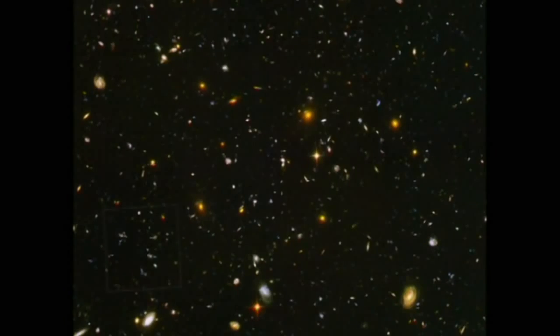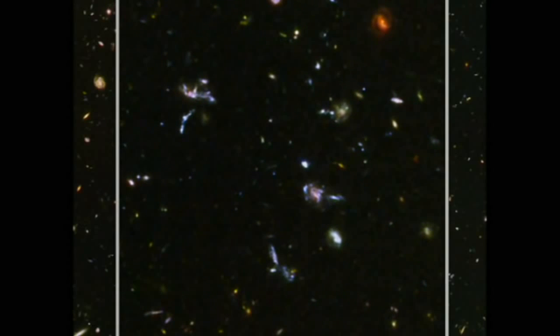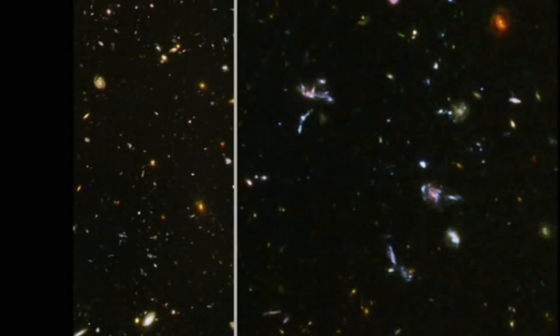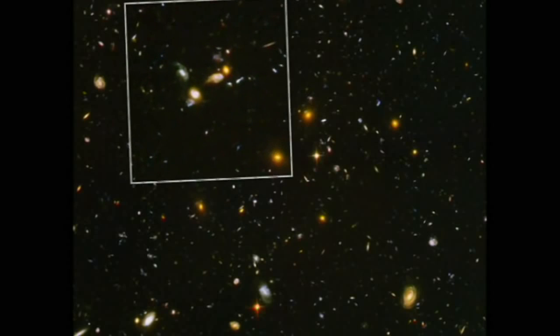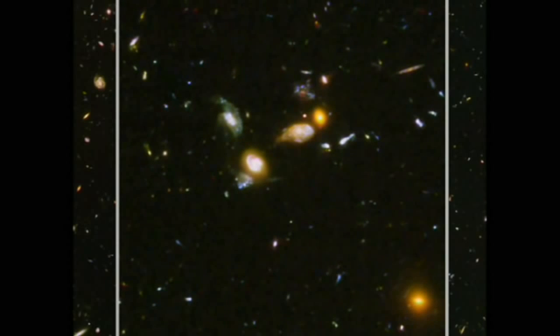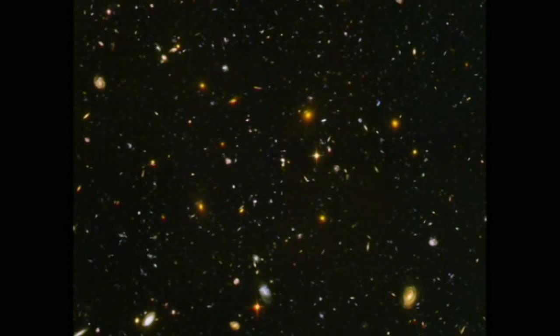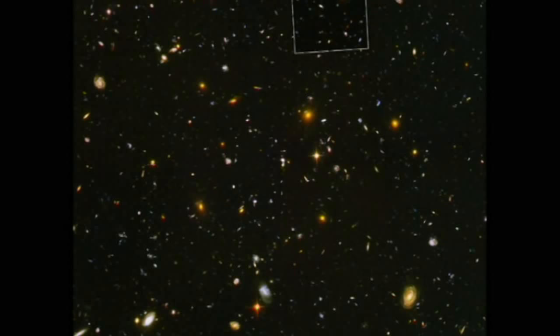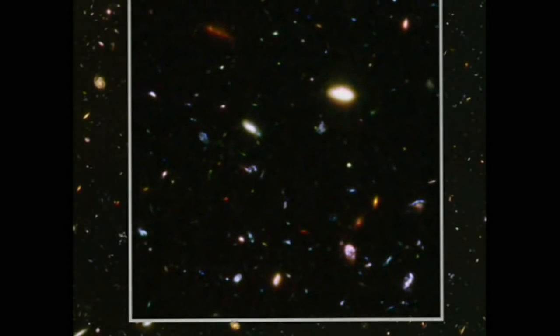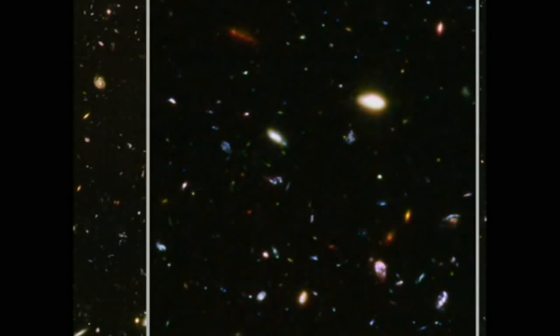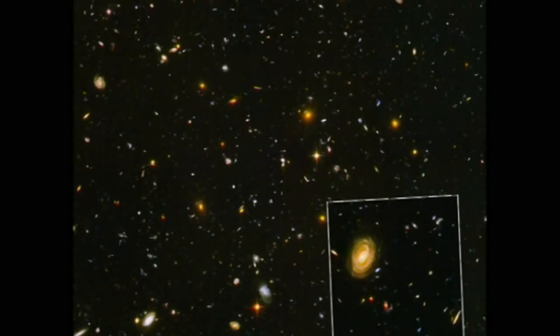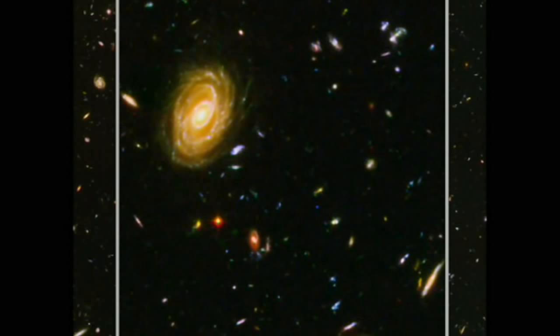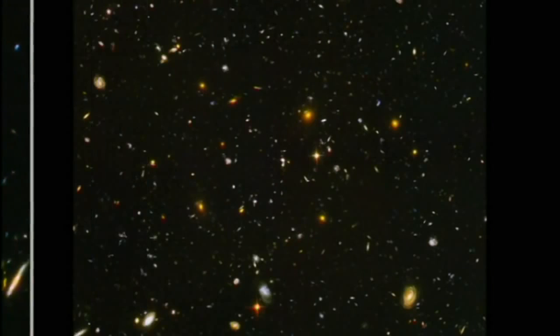The deep field images are studded with a wide range of galaxies of various sizes, shapes and colors. Astronomers will spend years studying the myriad shapes of the galaxies in this image to understand how they formed and have evolved since the Big Bang. In vibrant contrast to the image's rich harvest of classic spiral and elliptical galaxies, there is also a zoo of oddball galaxies littering the field. Some look like toothpicks, others like links on a bracelet. A few appear to be interacting with each other. Their strange shapes are a far cry from the majestic spiral and elliptical galaxies we see today. These oddball galaxies chronicle a period when the universe was more chaotic, when order and structure were just beginning to emerge.